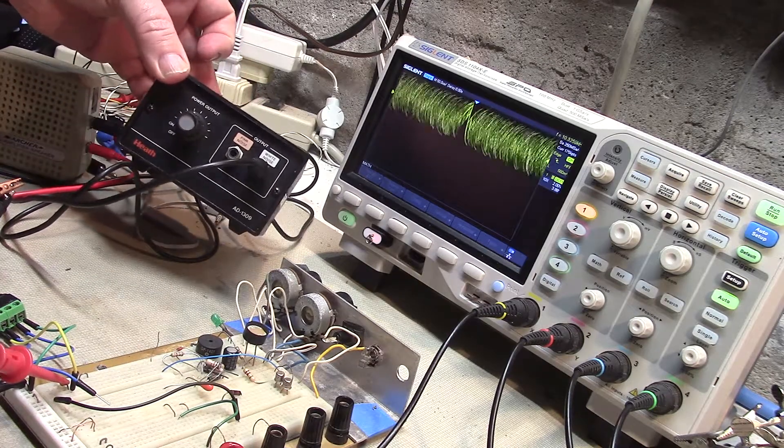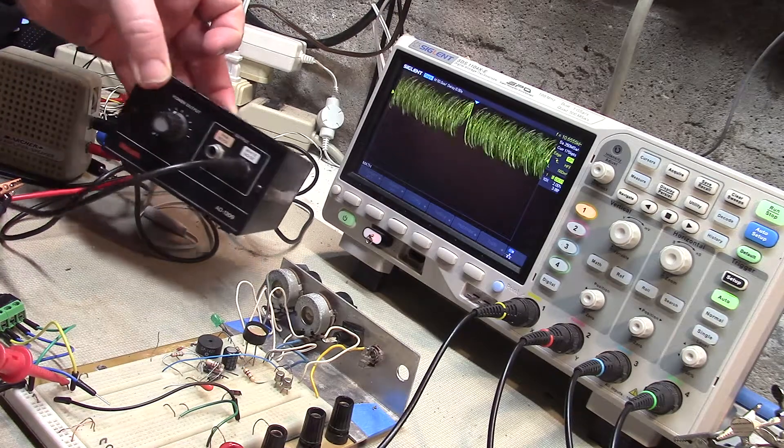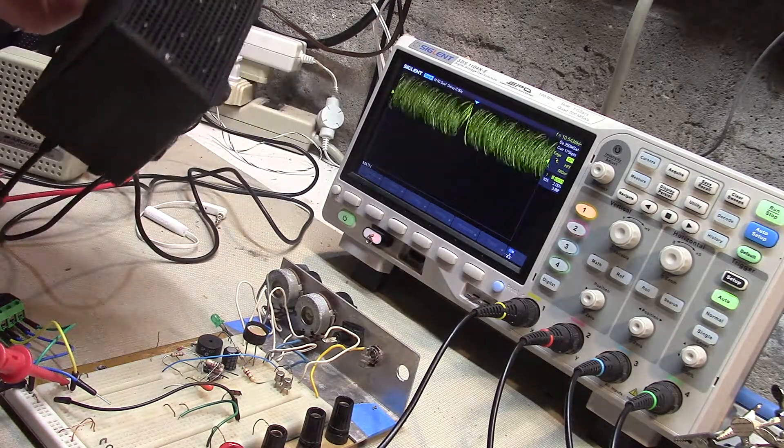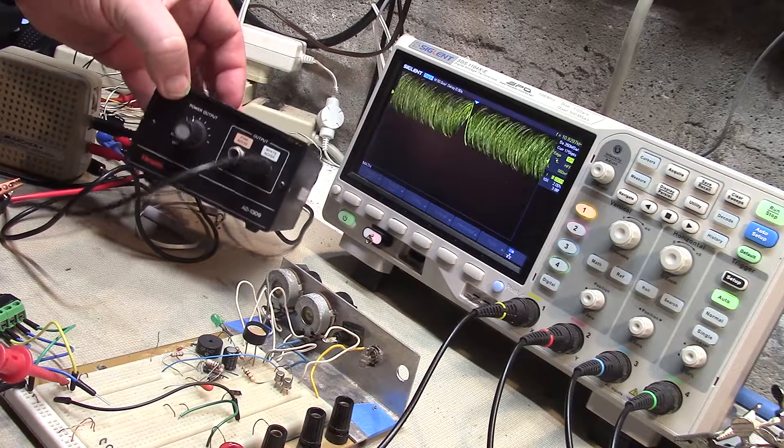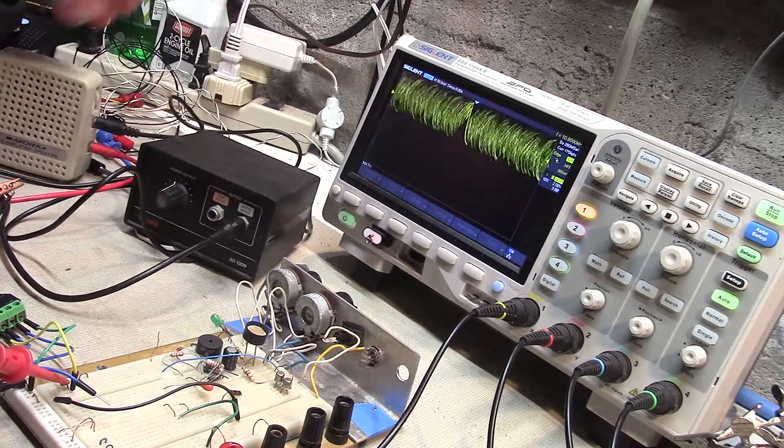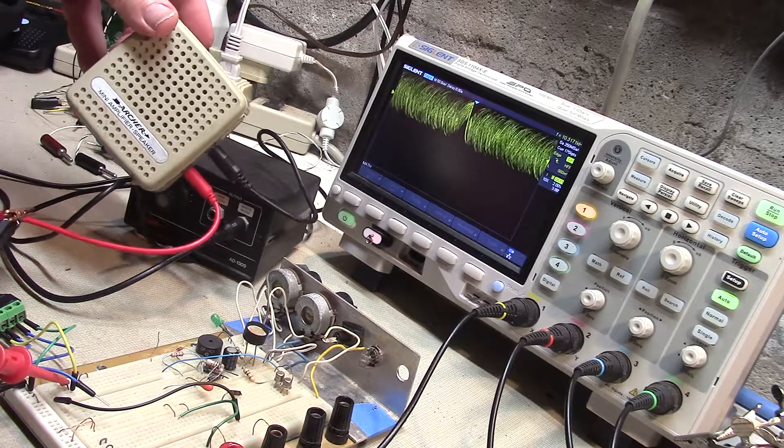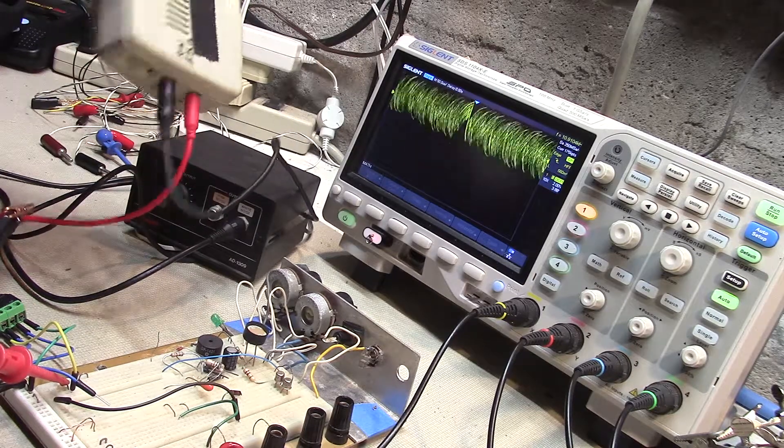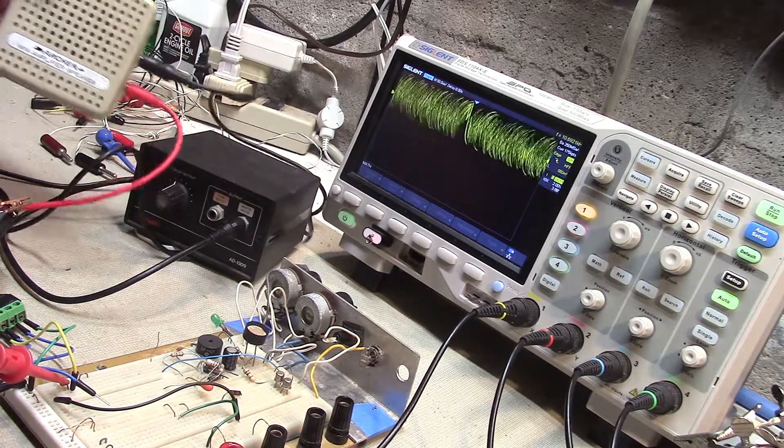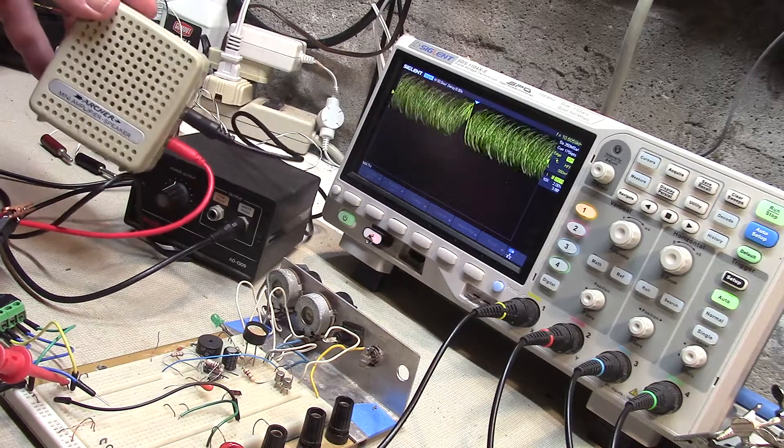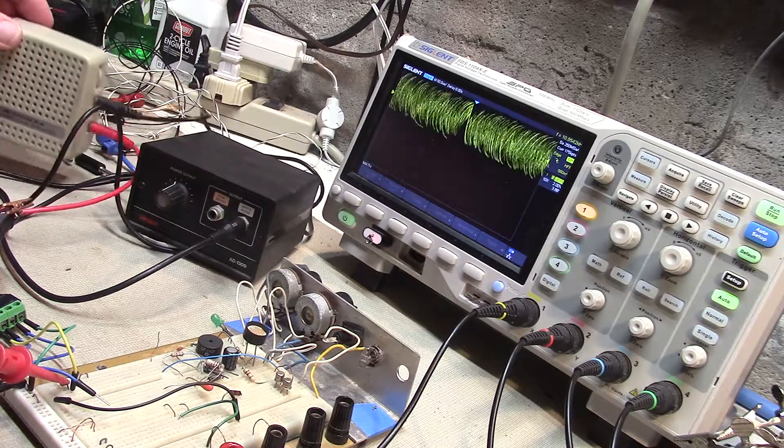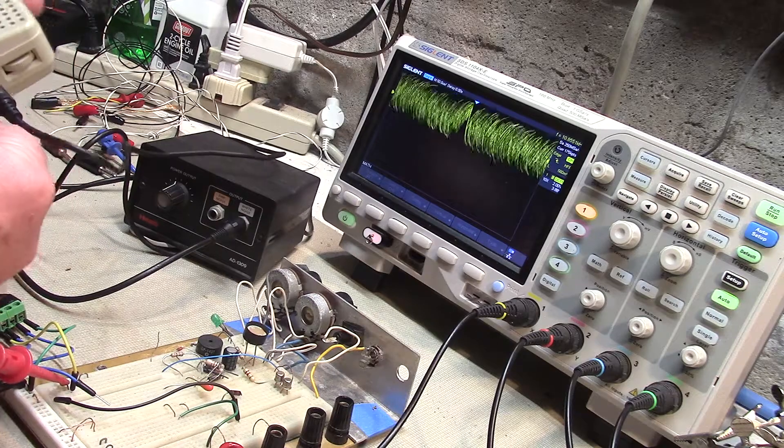There's an old Heathkit pink and white noise source. I actually built this from a kit in grad school. And check this out, an old Radio Shack 9 volt battery power amp. This is like a quarter watt amp and it's taking in the noise.